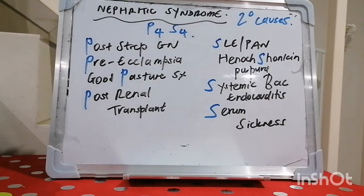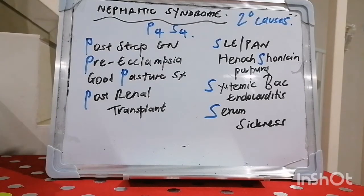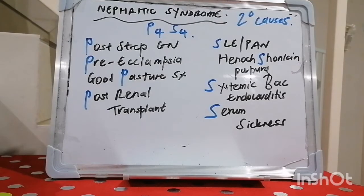But first, a little joke. One day there were different parts of the body rating each other. The brain told the liver: 'You're a six.' The spleen told the colon: 'You're a seven.' The urethra told the bladder: 'Urinate.'